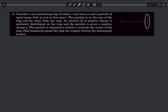Hey everyone, welcome back. In today's video we'll cover problem number 19 from the check your understanding section of the electrostatics chapter of Pathfinder. We have a non-conducting ring of radius r and mass m, and a particle of equal mass, both at rest in free space. A charge Q is uniformly distributed on the ring, the particle has charge q, and the particle is given a velocity u toward the center of the ring. We need to find the maximum speed the ring can acquire.